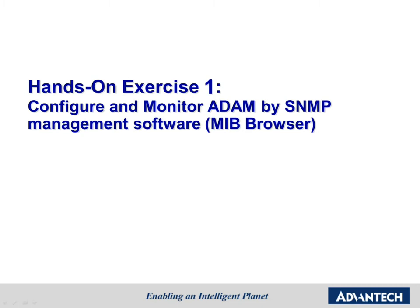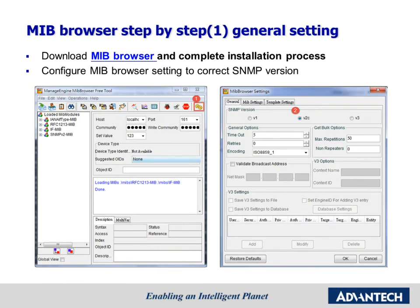Let's go to the first hands-on: configure and monitor ADAM by SNMP management software, MIB Browser. First, please download the MIB Browser. The SNMP protocol has gone through many changes since it was first introduced. v1 has been around for a long time and is still widely supported. v2c is a revision of v2 and is the most popular version of the v2 protocol. The key advantage is the inform and get bulk command, which enhances internet transmission security. v3 is the latest version of SNMP, with primary features of enhanced security providing three services: authentication, privacy, and access control. For the ADAM module, we support v2c and v1, and for our trap messages we support v1.